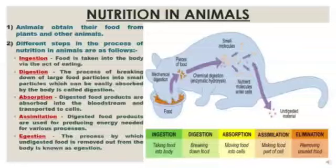There are five processes in the intake of nutrition in animals: ingestion — taking food into the body; digestion — breaking down food; absorption — moving food into cells; assimilation — making food part of the cell; and elimination — removing unused food.